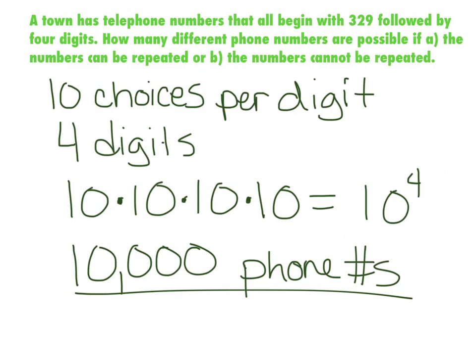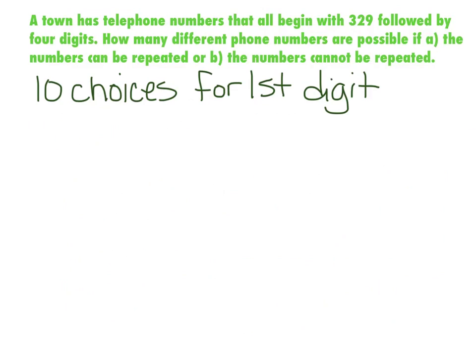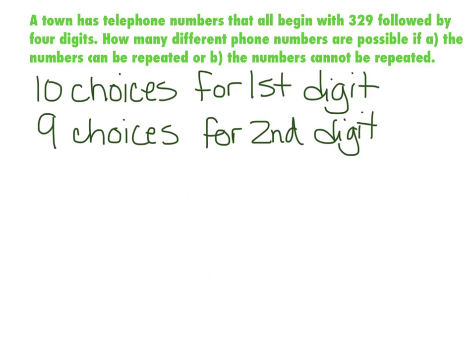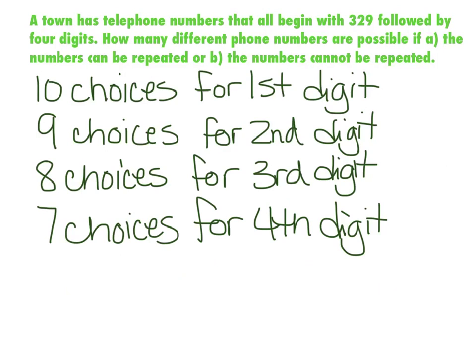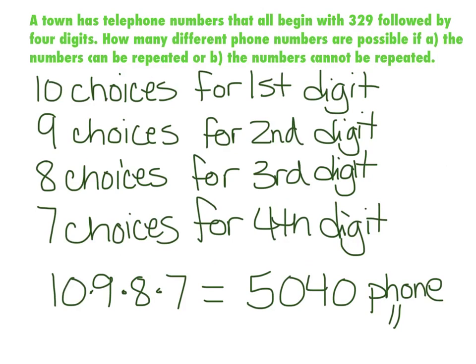Now, if the numbers cannot be repeated, that changes things because you have 10 choices for your first digit, but if you can't repeat, you can't use that number again. So for your second digit, you have 9 choices. And then you've used 2, so now you only have 8 choices for your third digit and 7 choices for your fourth one. So we're going to multiply 10 times 9 times 8 times 7, and when you do that, you'll get 5,040 phone numbers.